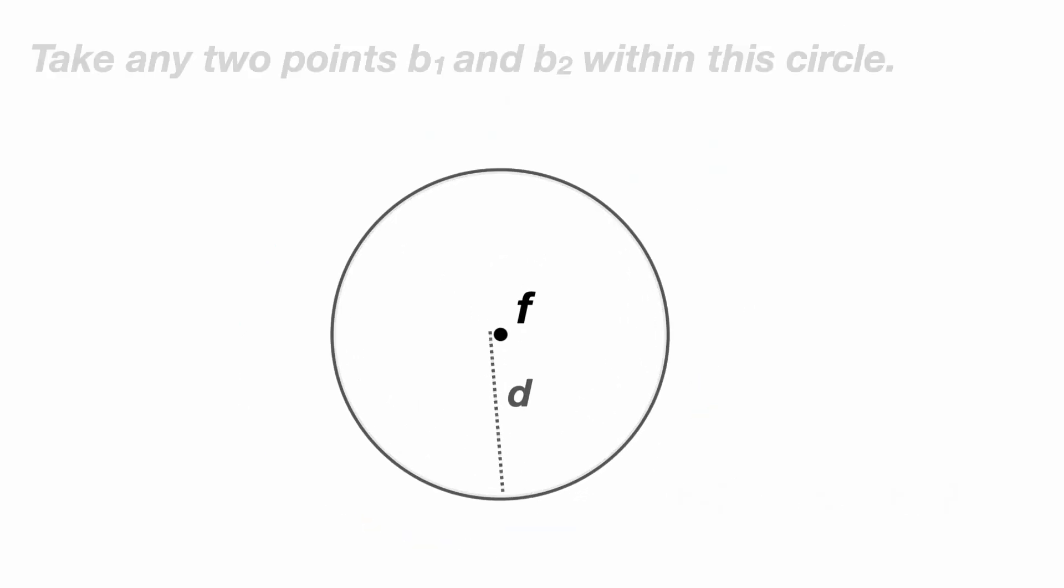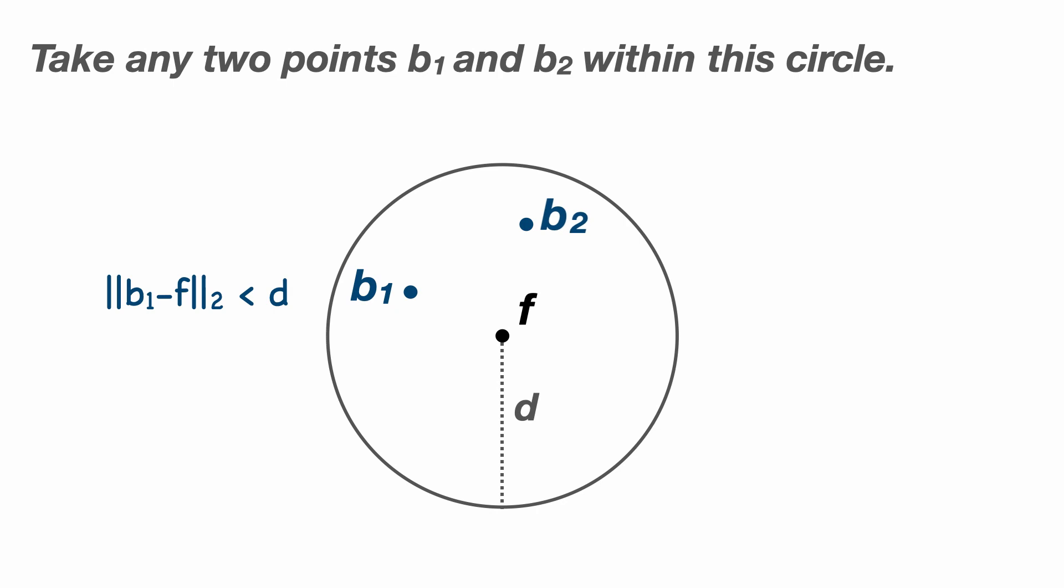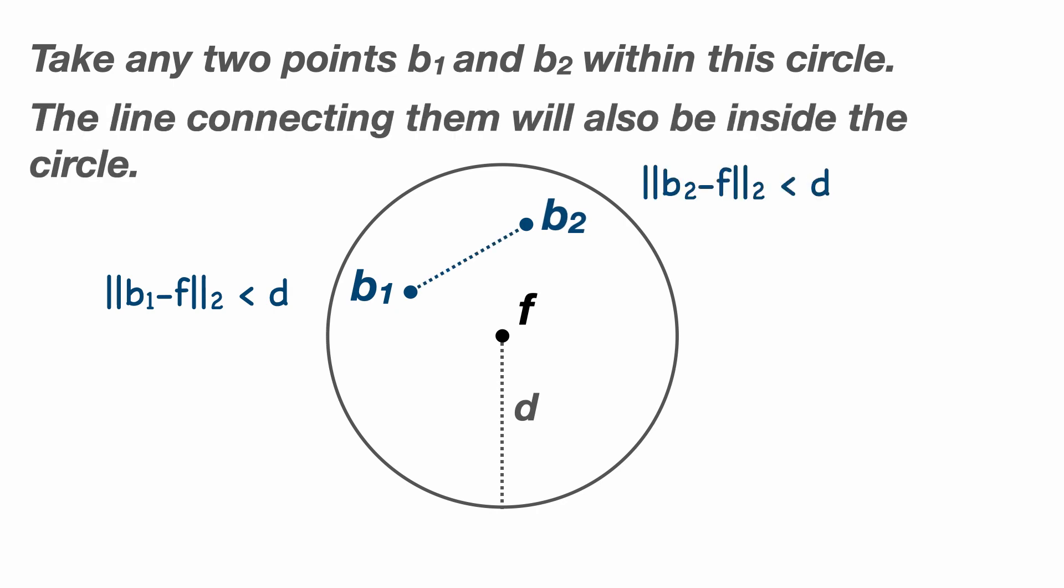Take any two points B1 and B2 in the interior of this circle and we can see that any points along the line connecting them are also in the circle. Any set which has this property is convex and so we say the L2 norm is convex. For a full description of convex sets click the link to the video.